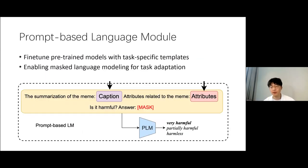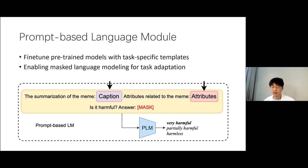To address the challenge of limited data availability, we implemented prompt-based learning — a strategy that fine-tunes a pre-trained language model by leveraging prompt-based fine-tuning. It transfers downstream tasks into a masked language model task by employing specific prompt templates and a new label space. Specifically, we integrate the previously generated captions and attributes into the prompt, creating augmented inputs into the language model to generate predictions for potential labels at the masked position.